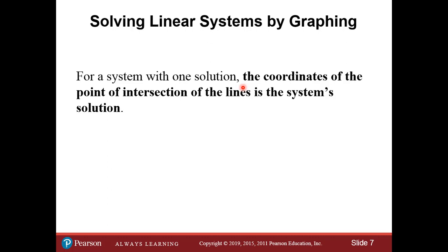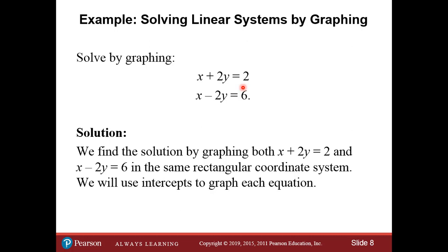For a system with one solution, the coordinates of the point of intersection represent where the two lines cross. That intersection point is the solution. We can solve by graphing the two equations and finding where the two graphs cross — whatever point they intersect at is the solution to the system. We graph both equations on the same rectangular coordinate plane and see where they intersect.